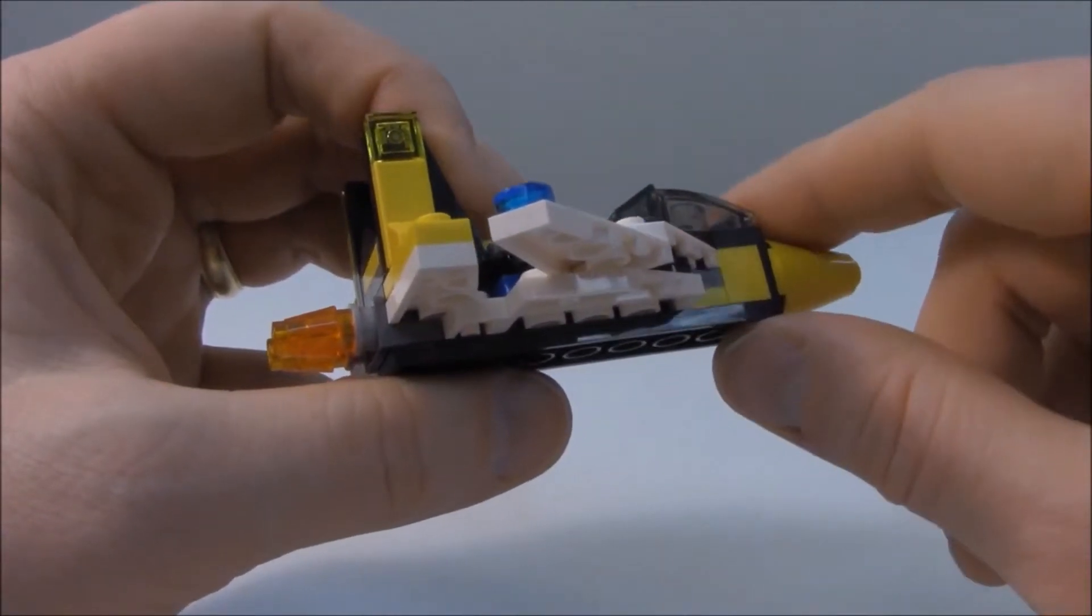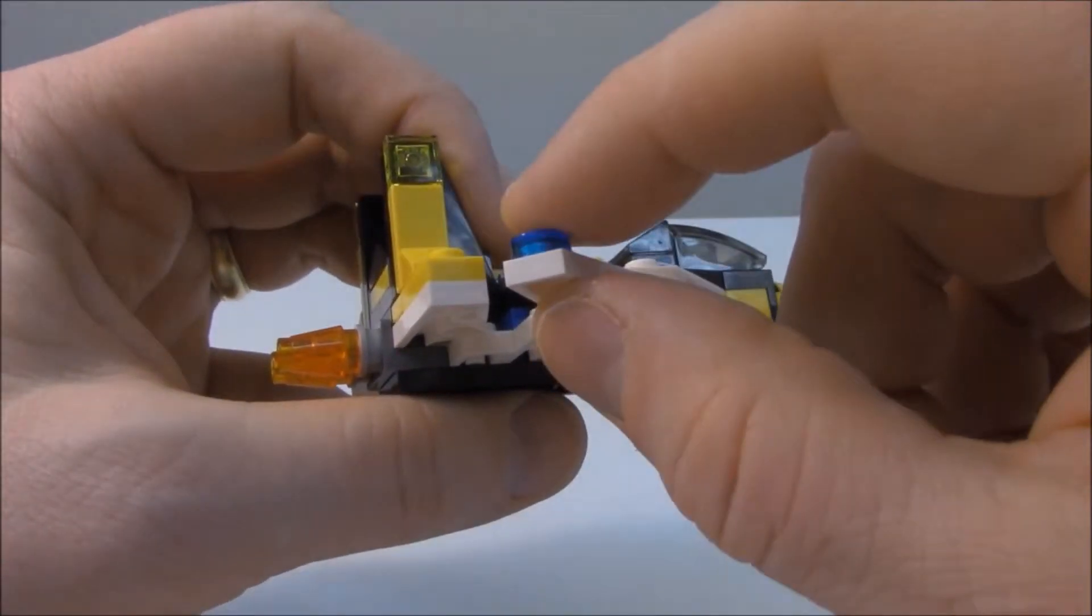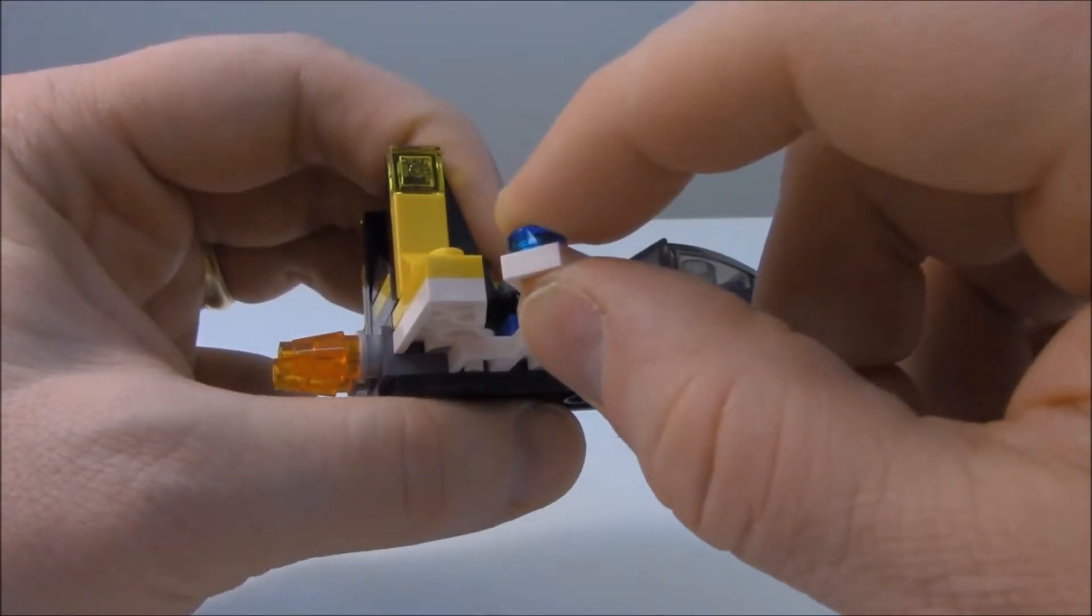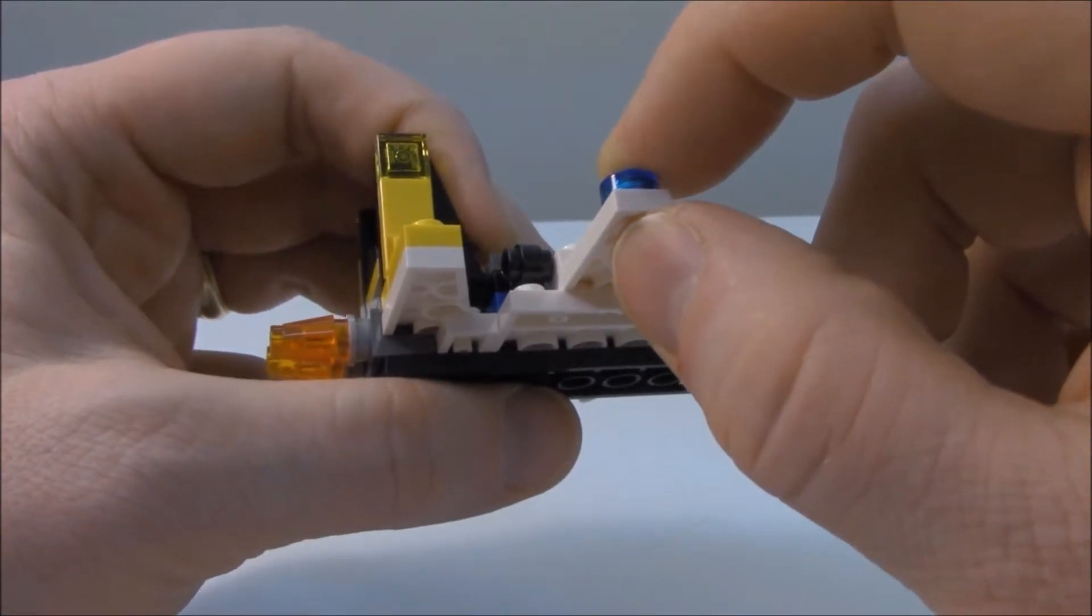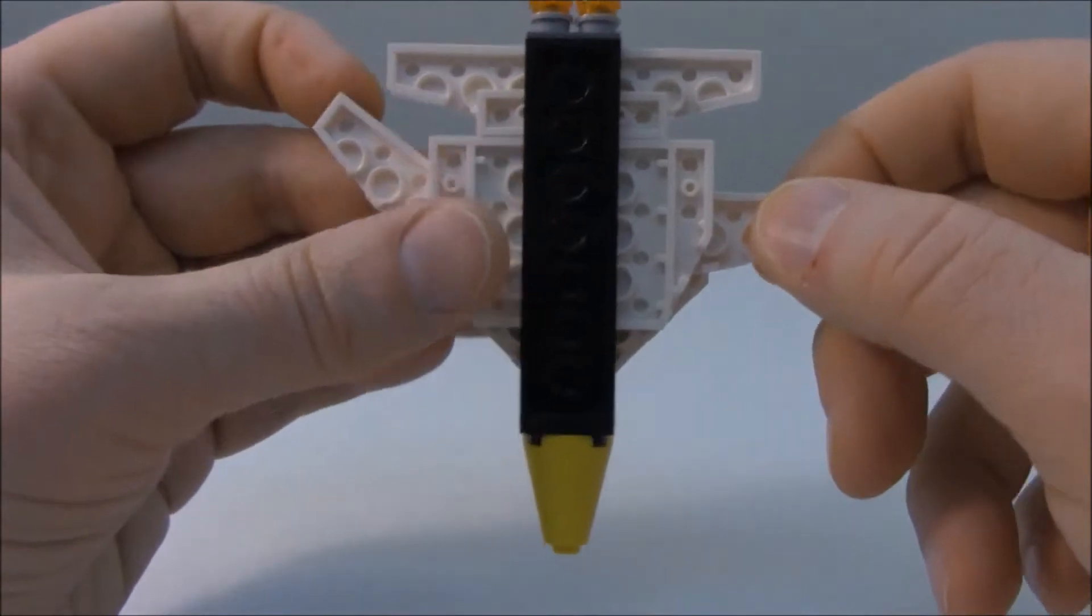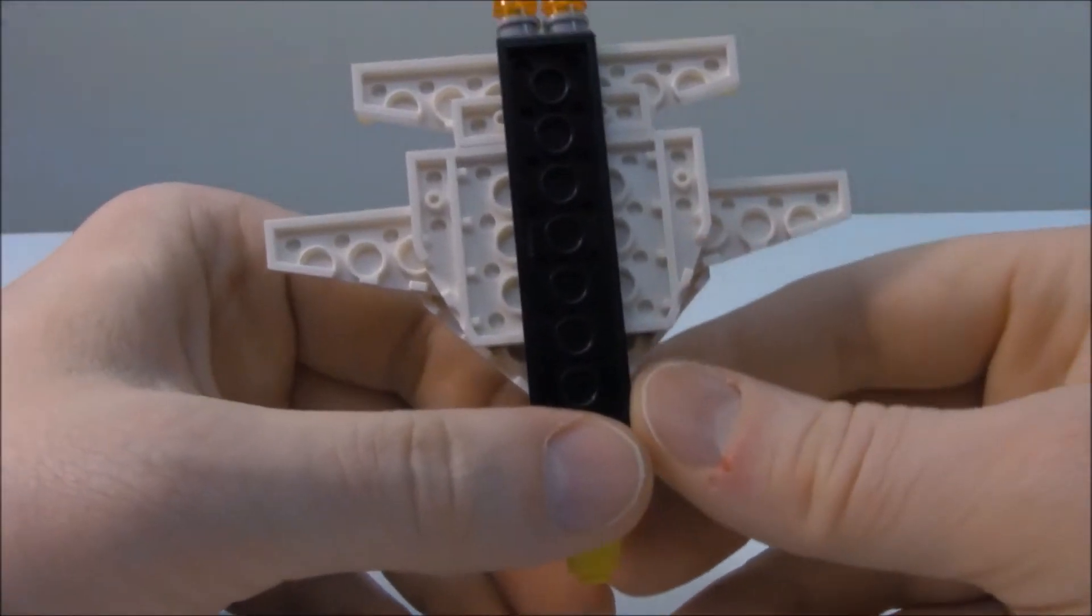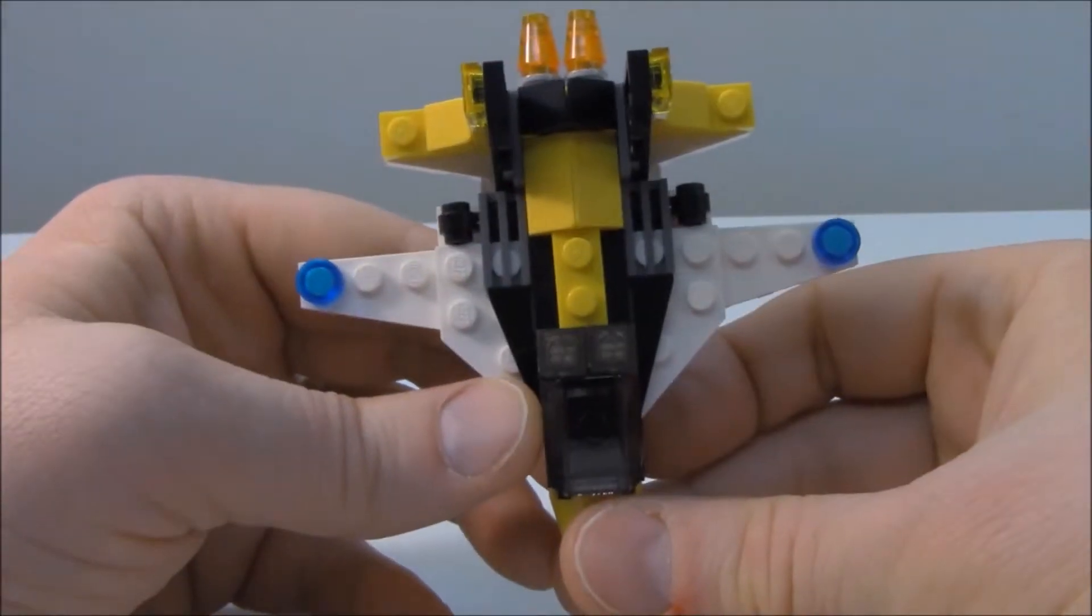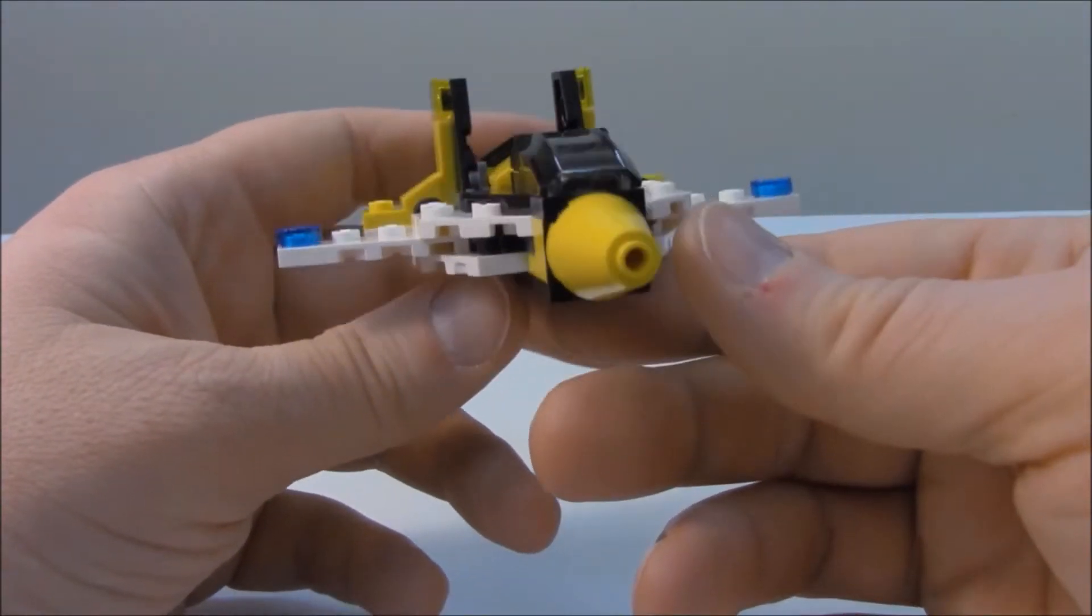And without using Technic pieces or hinge pieces, you can get some motion just by oscillating the wing back and forth on that single stud. But it has good, tight stability. And having the wings fully exposed from the bottom or looking at it from the top, I like this. It's a nice little feature that they added into the design.